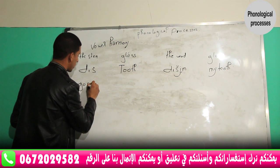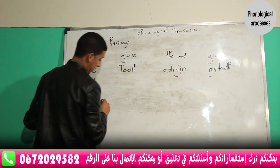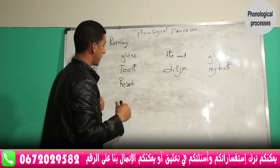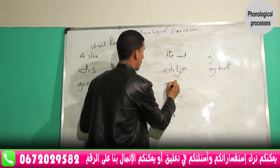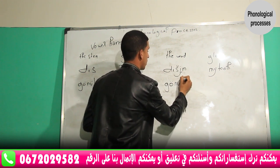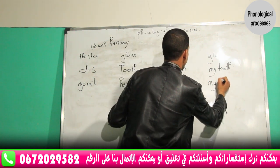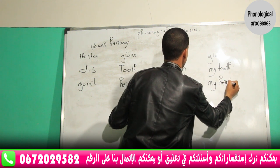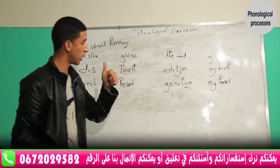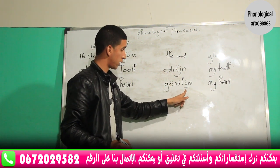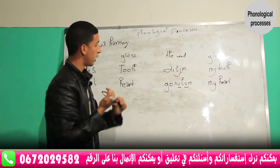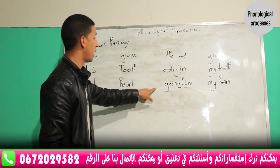Another example: 'gonol' means 'heart'. If you want to say 'my heart', you say 'gonolon'. Here the suffix vowel is high, front, and round. It agrees with the stem vowel in terms of rounding and backness. So in this case, we are talking about vowel harmony.